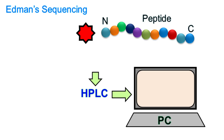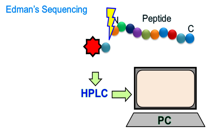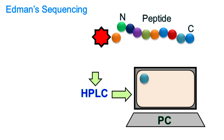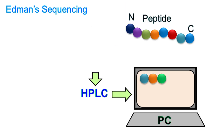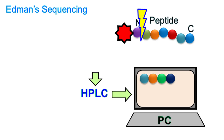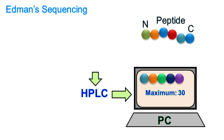This reaction can be carried out several times to find the sequence of the peptide from the N-terminal. The maximum number of amino acids that can be identified by this technique is under 30.